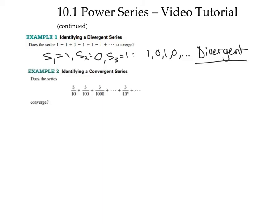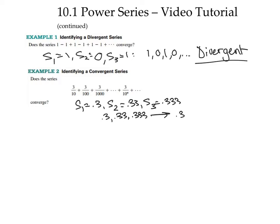What about the series 3 tenths plus 3 hundredths plus 3 thousandths plus, where the general term is 3 over 10 to the n, forever? Does it converge? The first partial sum is 0.3. The second partial sum is 0.33. The third is 0.333, and so on. The sequence of partial sums goes 0.3, 0.33, 0.333, and is clearly heading to 0.3 repeating, which is one-third. So this is an example of a convergent infinite series.